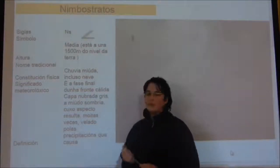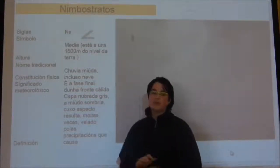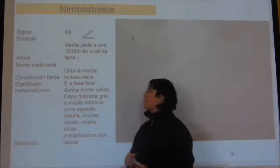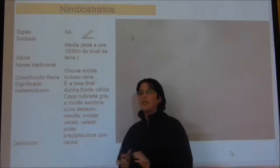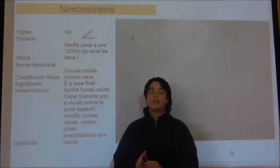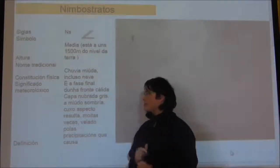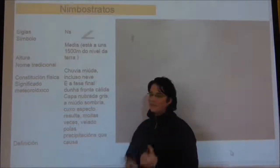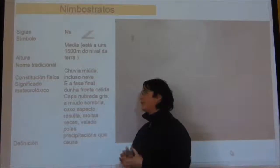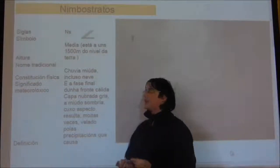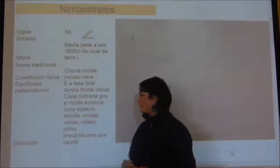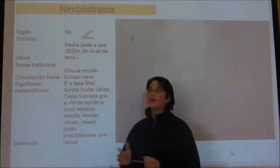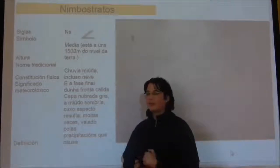Está constituida por lluvia miúda e incluso neve. Os Nimbostratus é a fase final de una fronte cálida. O significado deste tipo de nube é unha capa nubada gris al momento de sombría que resulta velada pola especificación.